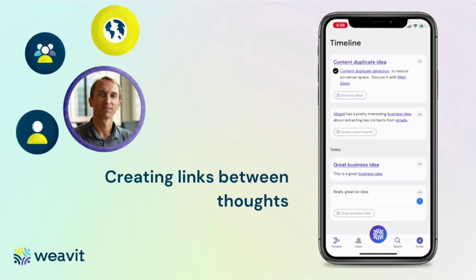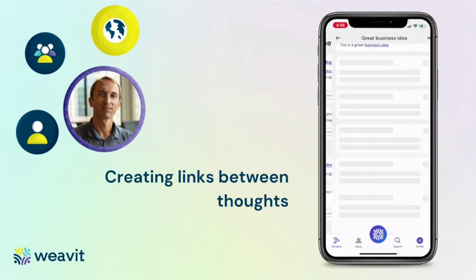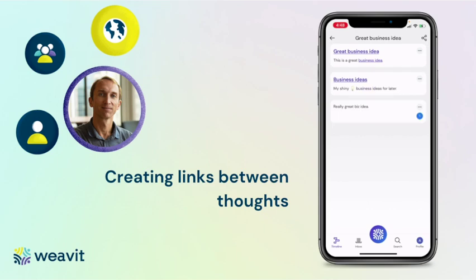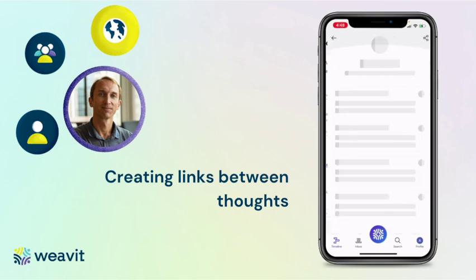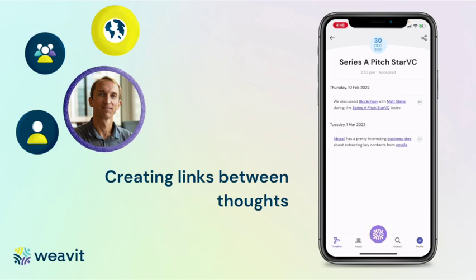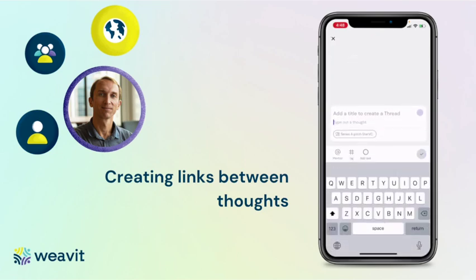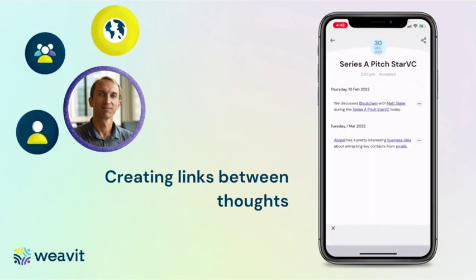How do we create all those links? There are three ways to create links. The first way, as shown, is to be inside a specific thread or inside a specific snapshot — like this meeting snapshot — and just create a card from there. It will be automatically linked to that snapshot or thread, as we can see from the little chip here.